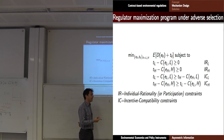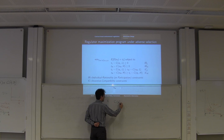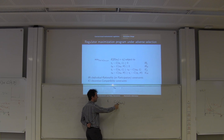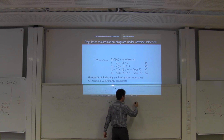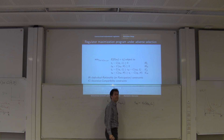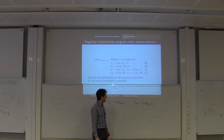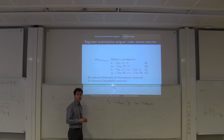Consider a low-cost firm. If the low-cost firm tells the truth, it selects the emission and subsidy for low-cost, incurs the cost of low-cost with the emission for a low-cost firm, and receives that transfer. If it lies — that is, it selects the emission and subsidy assigned to high-cost — it gets the high-cost transfer but must emit at the high-cost level, even though it is of low-cost. The incentive-compatibility constraint says the firm's payoff is higher by telling the truth than by lying.